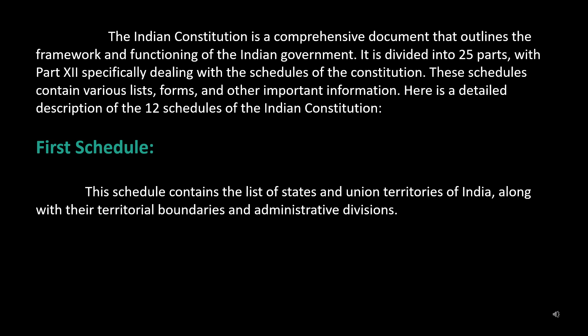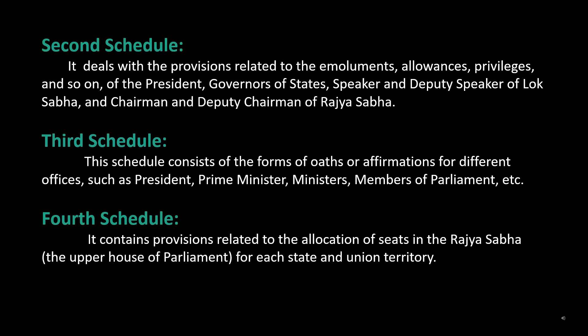1st Schedule: This schedule contains the list of states and union territories of India, along with their territorial boundaries and administrative divisions. 2nd Schedule: It deals with the provisions related to the emoluments, allowances, privileges, and so on, of the President, Governors of States, Speaker and Deputy Speaker of Lok Sabha, and Chairman and Deputy Chairman of Rajya Sabha.